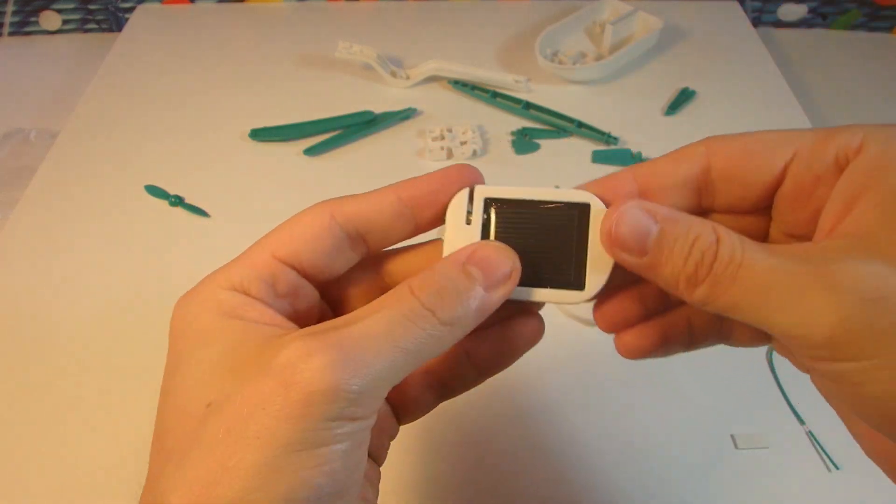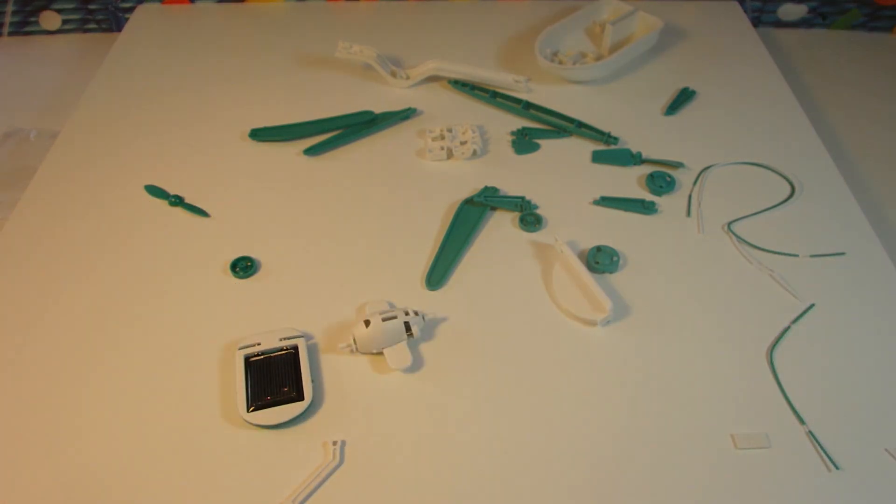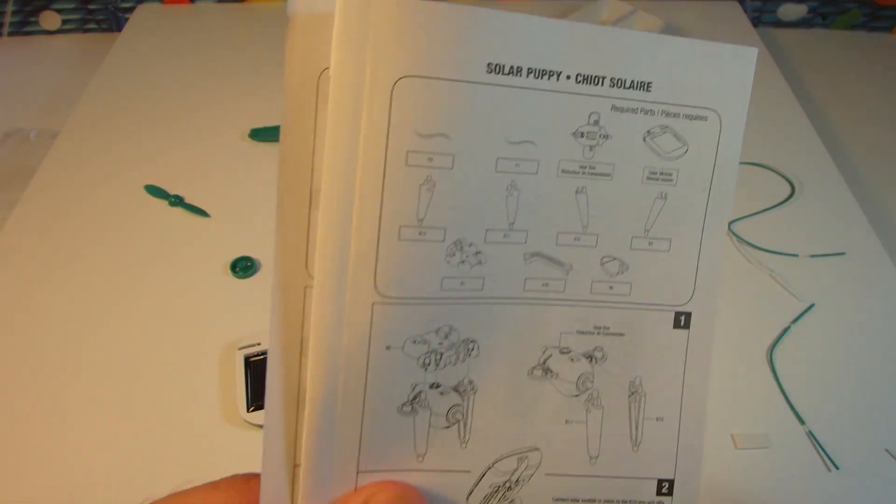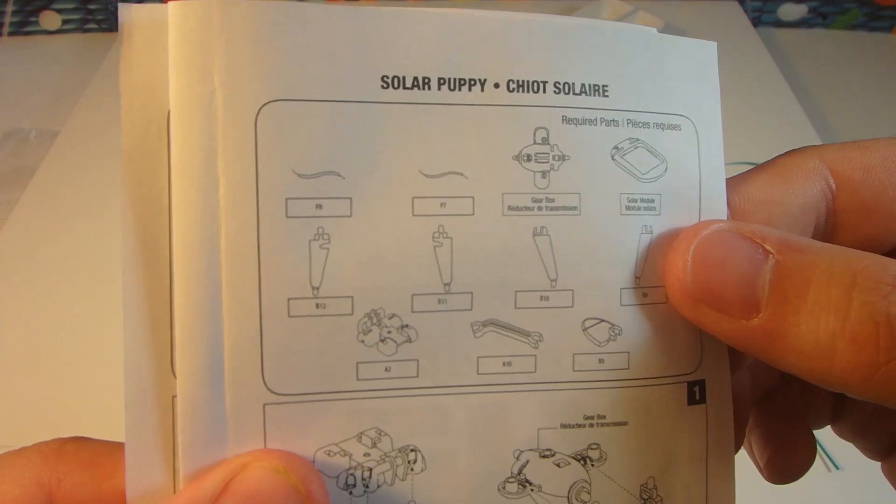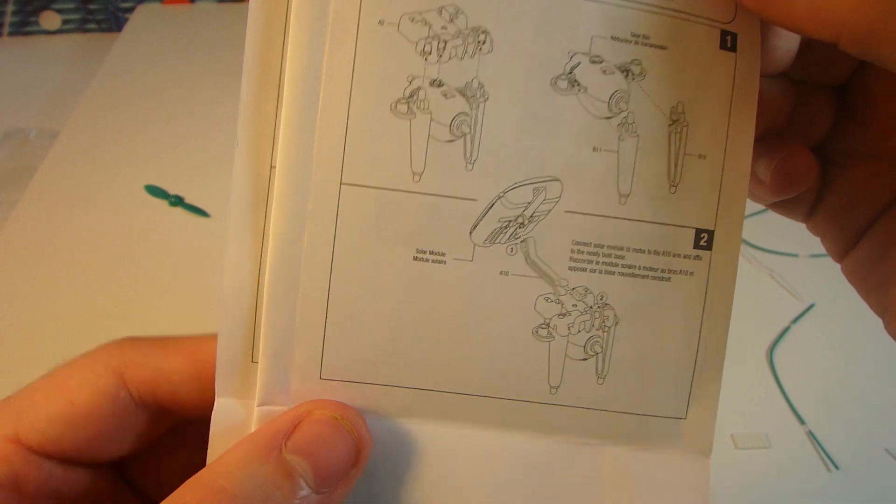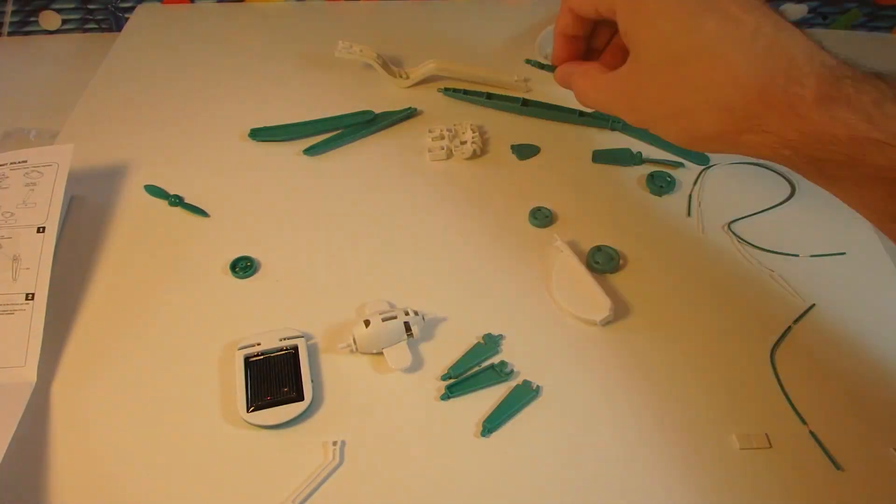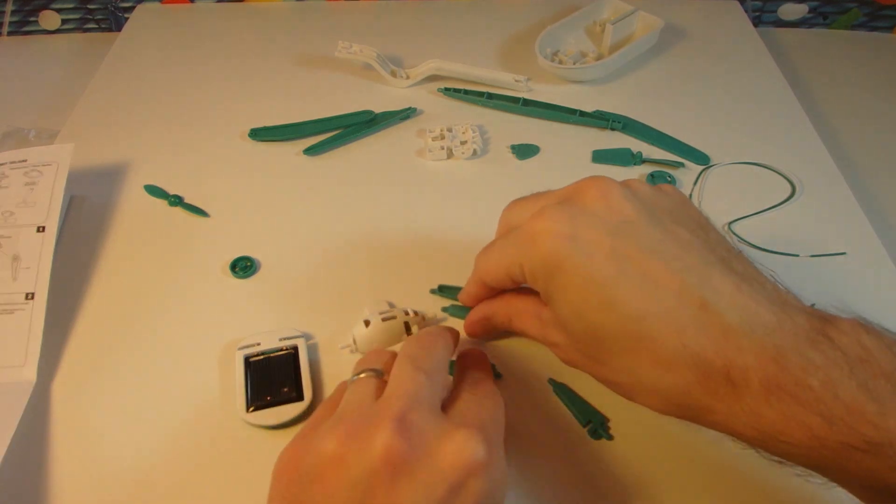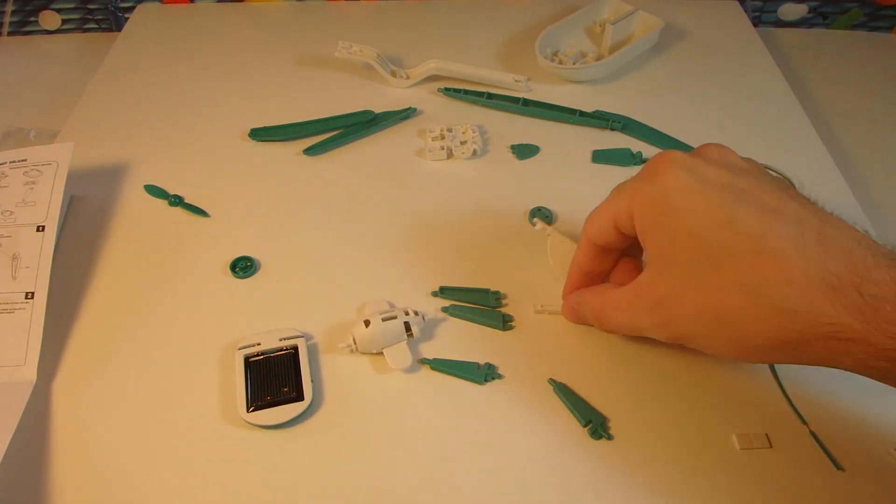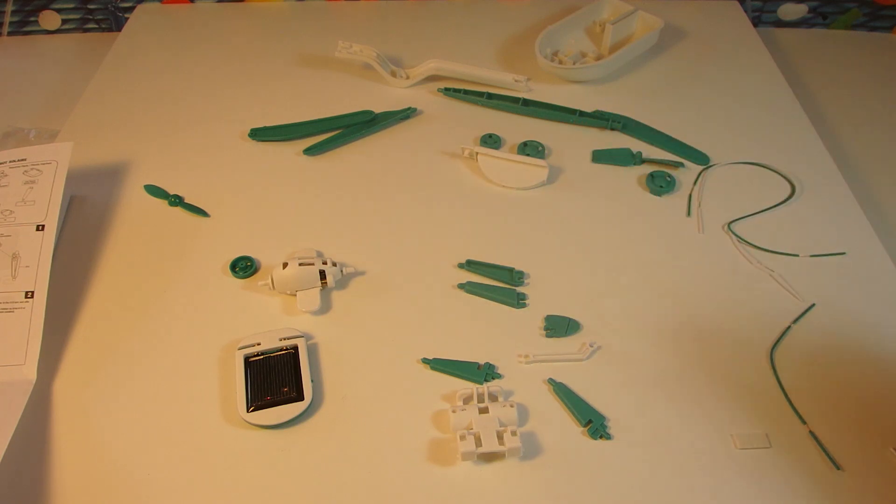That was much easier. And then here's the instructions for our solar puppy. So we got our legs. All right, I think that's all the pieces we need there.